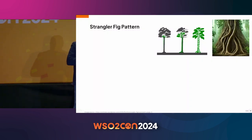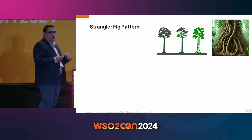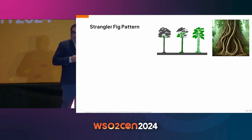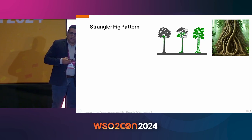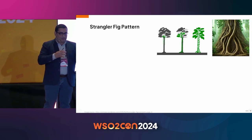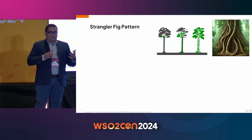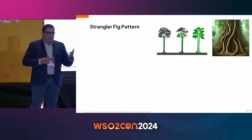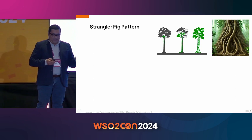A strangler fig is a tree that grows on another tree. In the diagram, the one in green is the strangler fig — it chooses a host tree to grow on, perhaps landing there through a bird dropping. It sends all its roots to the ground, and once it establishes that, it starts growing little by little, strangling the host tree. At the end, the strangler fig remains and the host tree has died. It's a very interesting concept in nature, which is called the strangler fig pattern as a result.